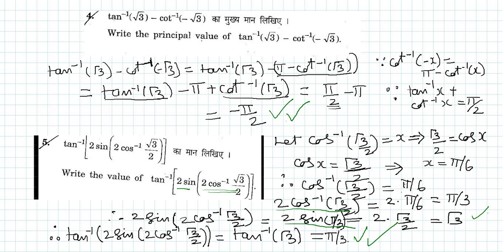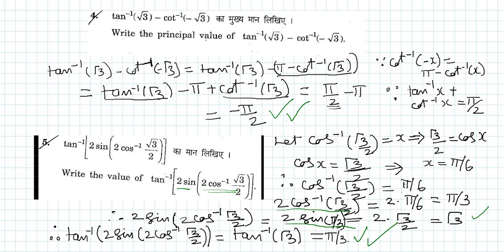Let us look at problem number 4. We have to write the principal value of tan inverse of root 3 minus cot inverse of minus root 3. Let us write that as tan inverse of root 3 minus cot inverse of minus root 3.